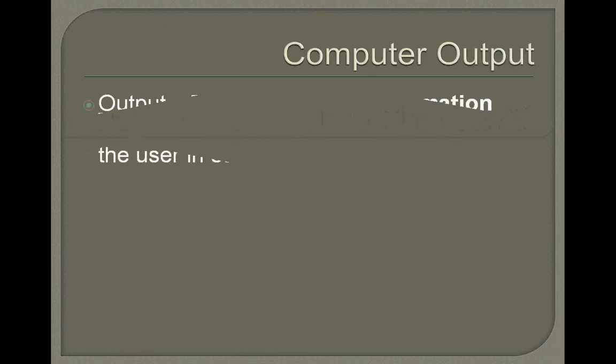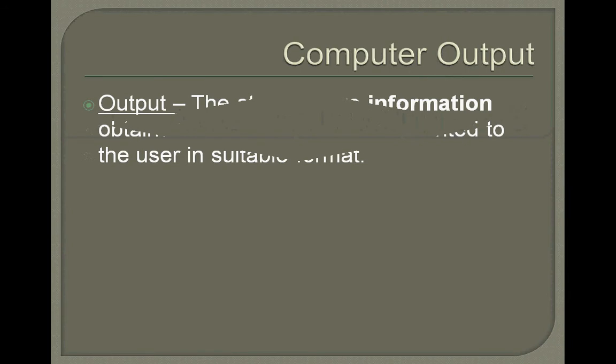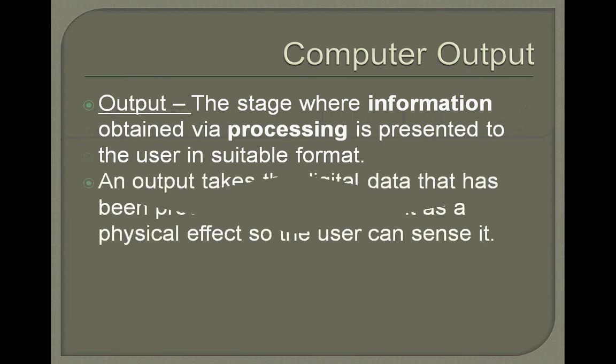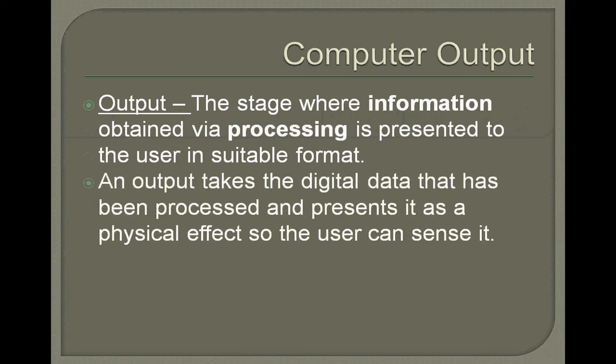Computer output. The definition of an output is the stage where information obtained via processing is presented to the user in a suitable format. The output takes the digital data that's been processed and presents it as a physical effect so the user can sense it.